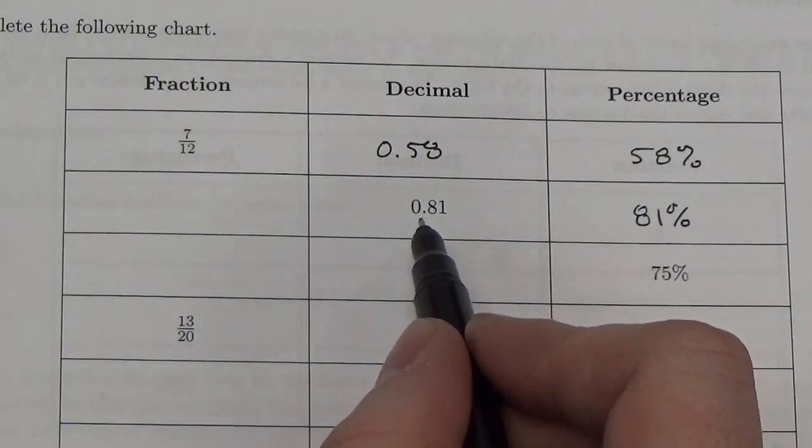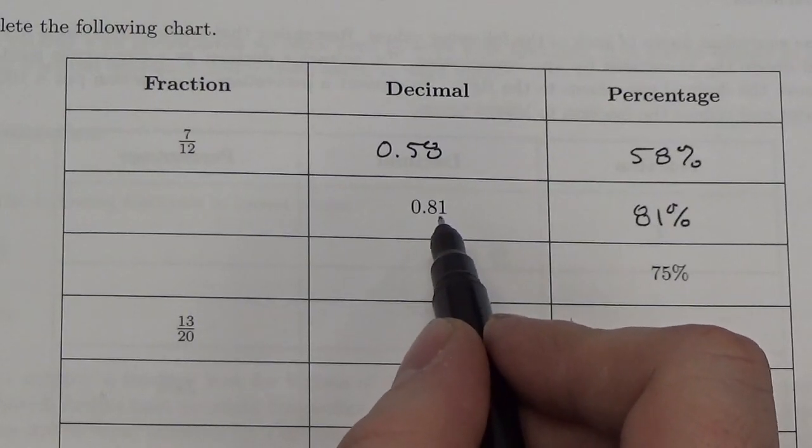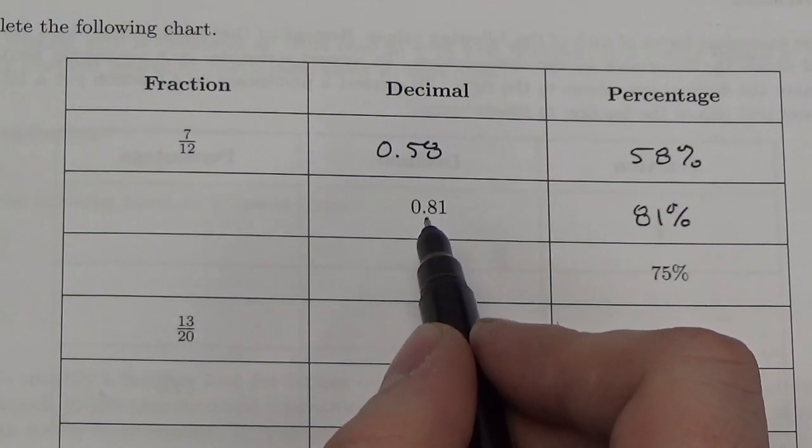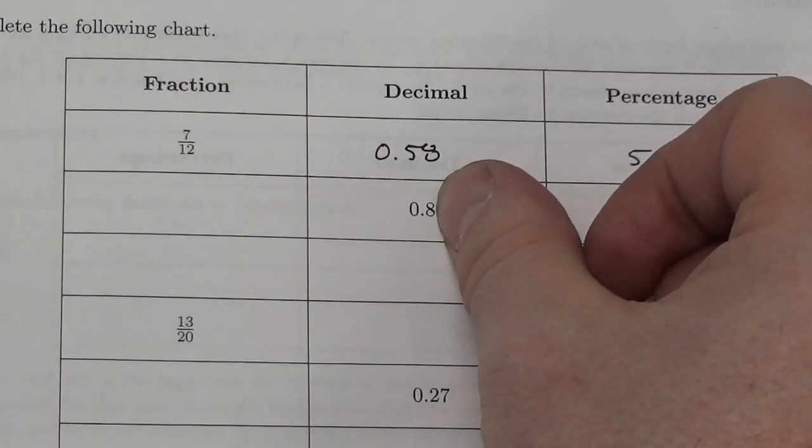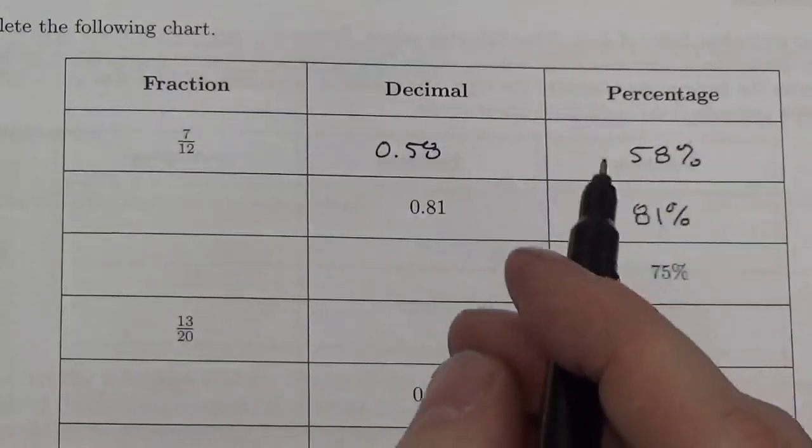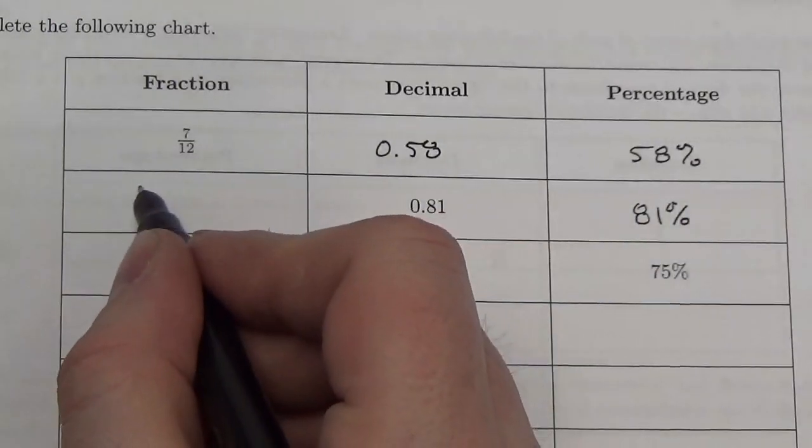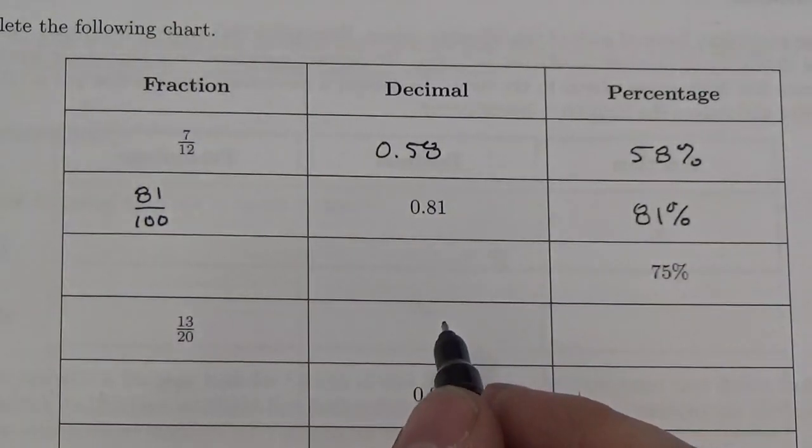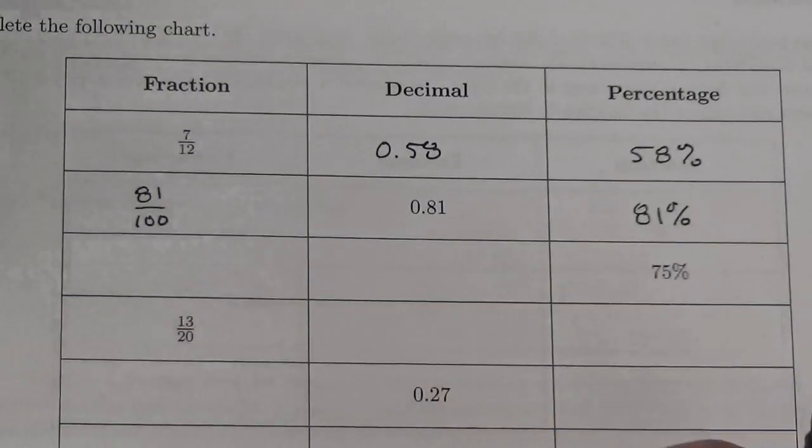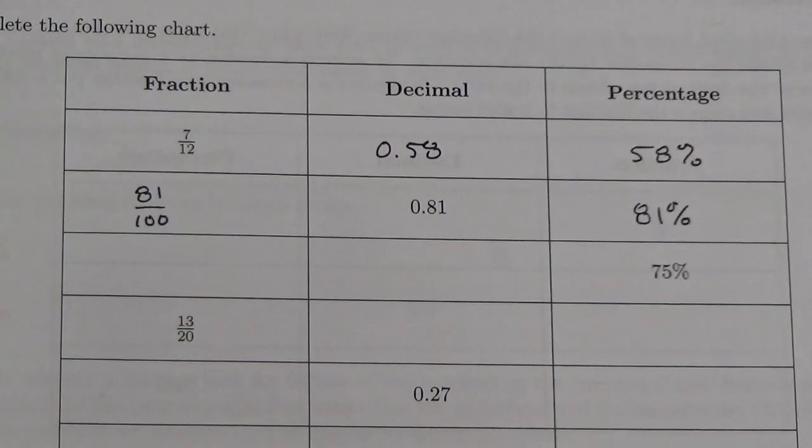This is 81 hundredths. Because there's two decimal places, it's hundredths. If it was just the 1, if we had 0.8, that would be 8 tenths. So, when I recognize that that's 81 hundredths, I write that as 81 over 100. I write it exactly the way I say it, as long as you're saying it properly.